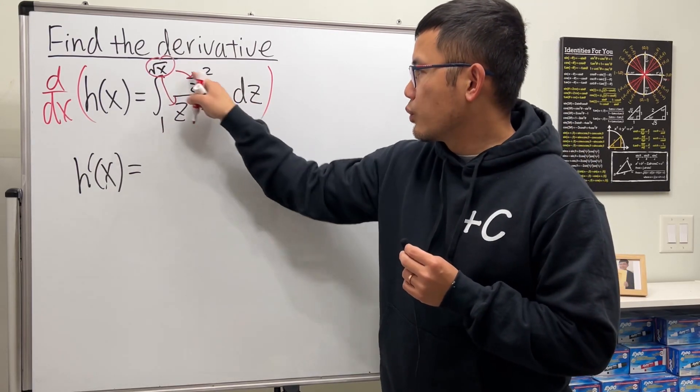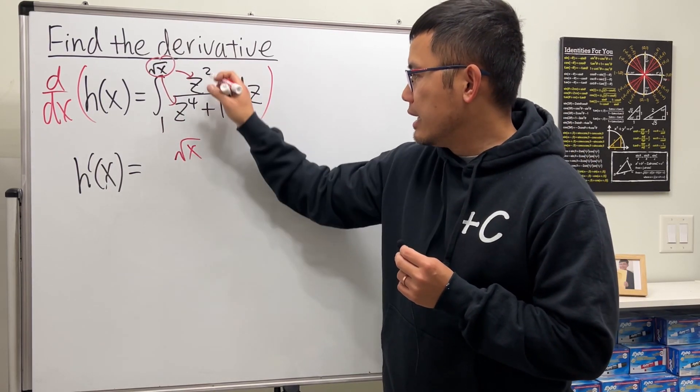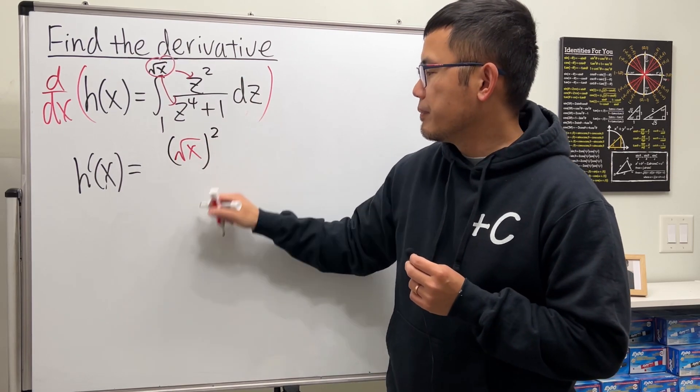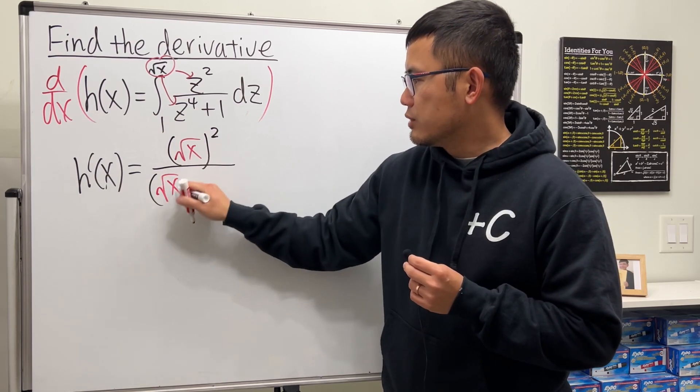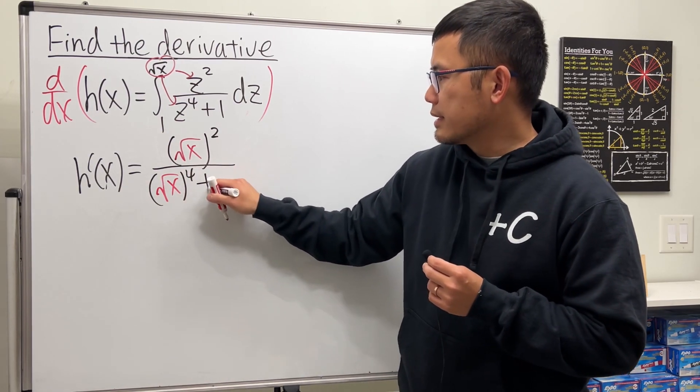So right here we have square root of x, and then raise that to the second power, over this in here. So square root of x raised to the fourth power, and then plus 1.